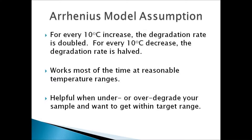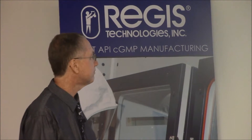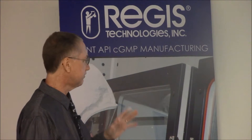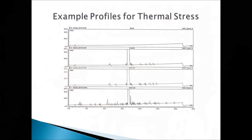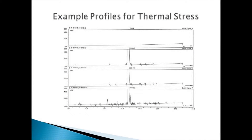There is a model assumption that says for every 10 degrees increase the degradation rate is doubled, and conversely halved for each decrease. You can play with that in terms of extending the duration of time to achieve your target, and it works most of the time at reasonable temperature ranges. When working with solids at very high temperatures where you're charring samples, it's no longer linear or logarithmic — something else is going on. It's very helpful to think about this when you are under or over degrading your sample.